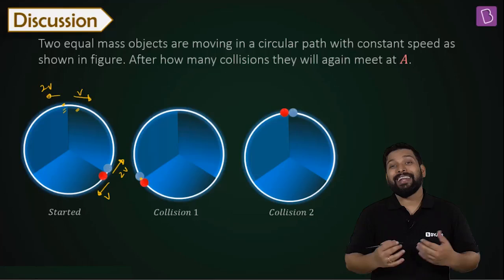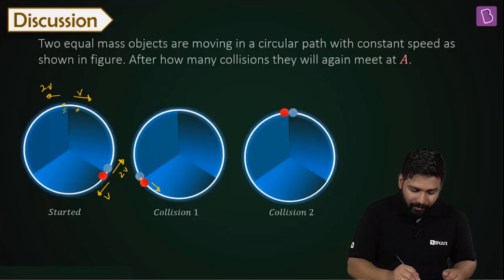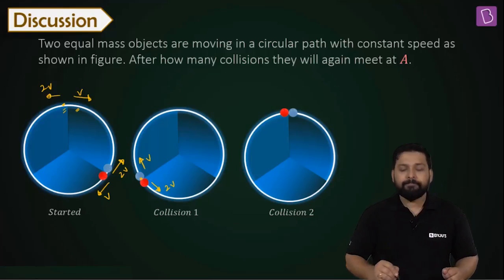Now their velocities will get exchanged again. And the red one will now have a velocity of 2V. And this is going to have a velocity V. Correct? Again, let's start from the beginning.